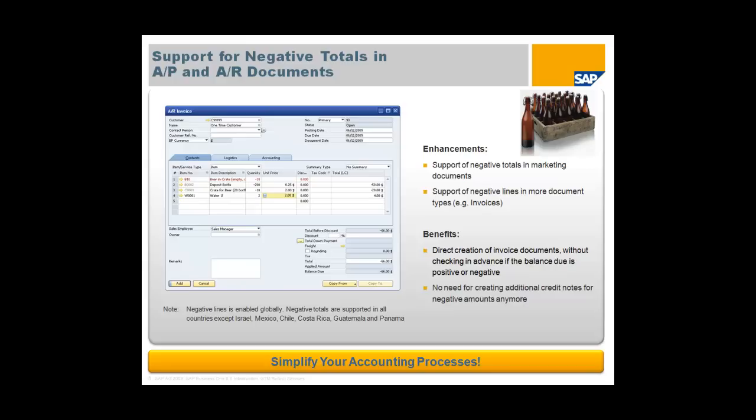It's important to note that you need to double-check whether these functions have been enabled for your localization and whether they are part of your legal requirements. For example, negative lines in the solution are enabled globally. However, negative totals are not supported in countries like Israel, Mexico, Chile, Costa Rica, Guatemala and Panama — because they fall outside the scope of those countries' local legal requirements.